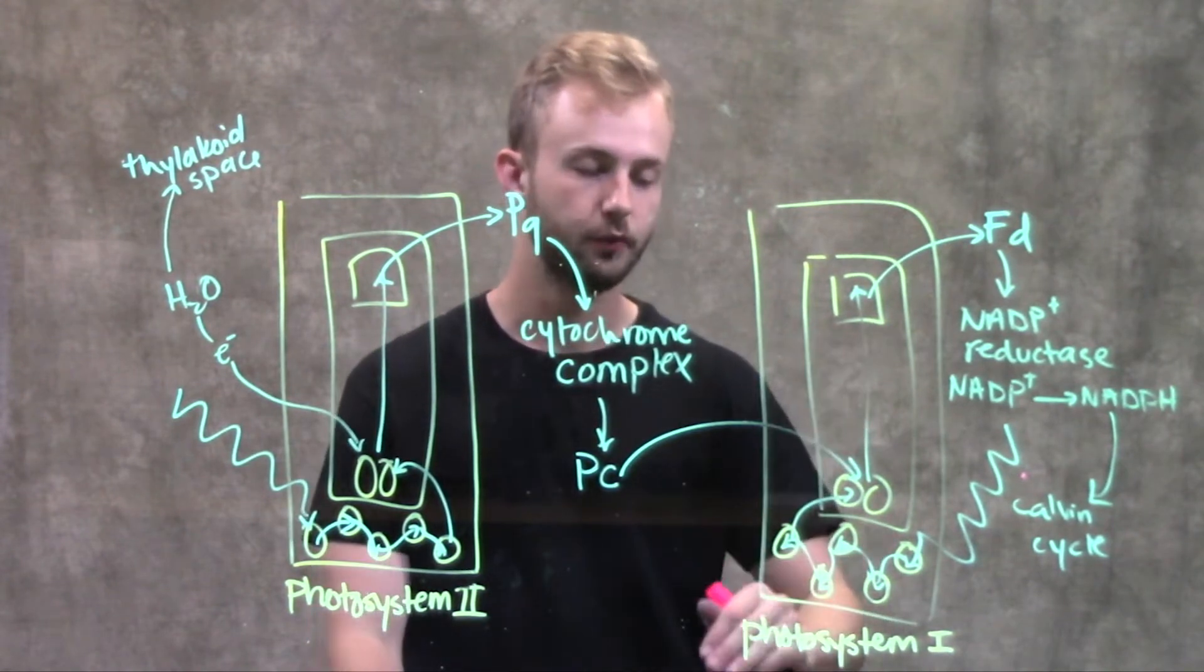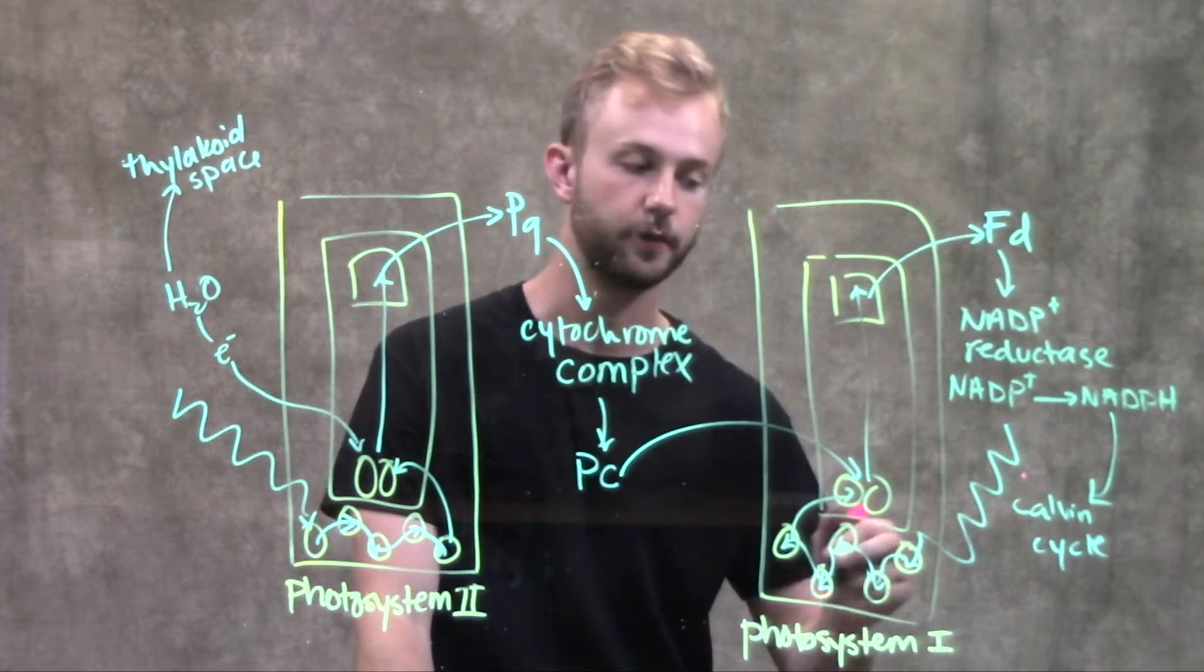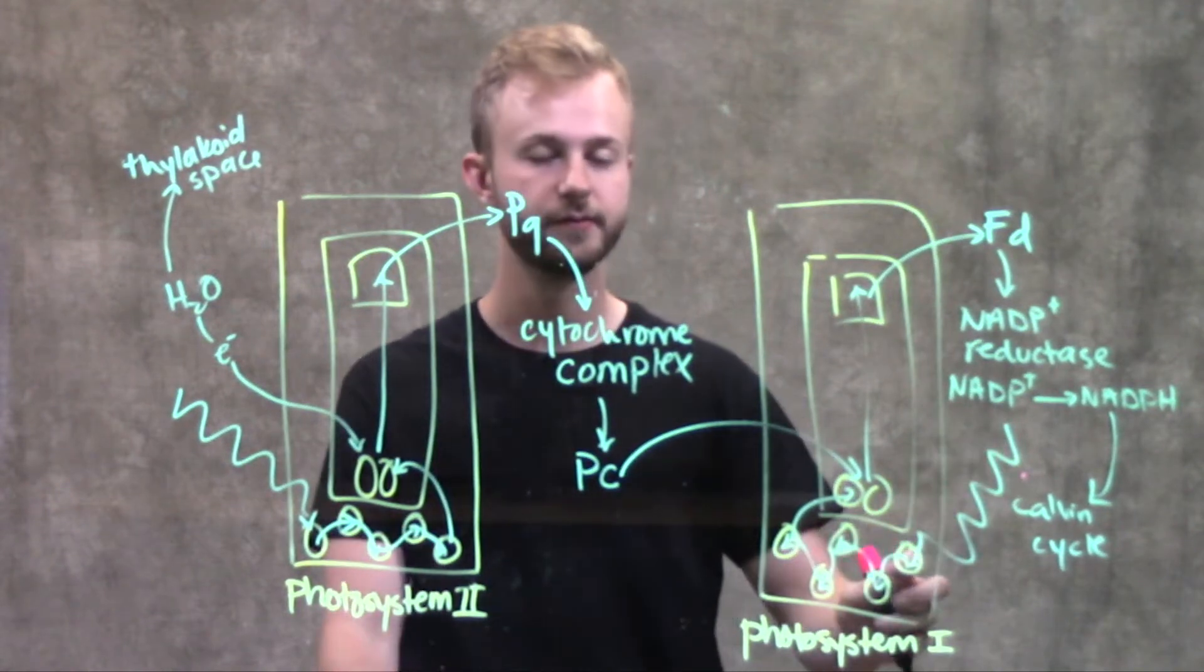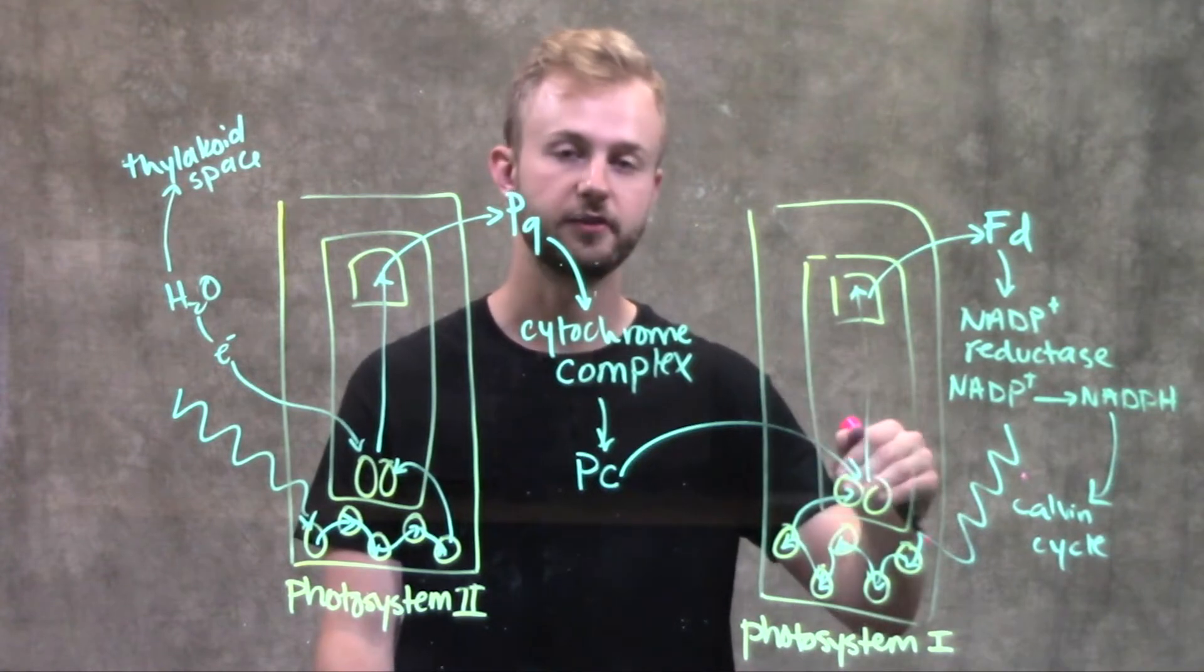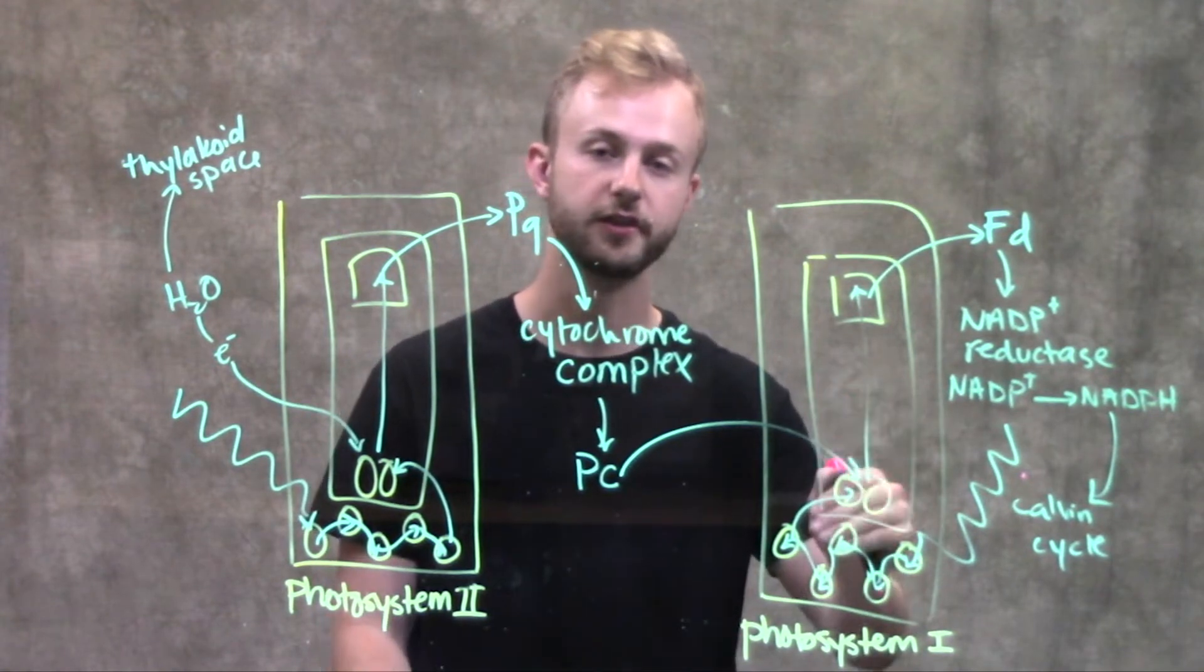With cyclic electron flow, you still have a photon of light that comes in and excites electrons in chlorophyll molecules, and that excitement gets passed on to the chlorophyll molecules in the reaction center complex.